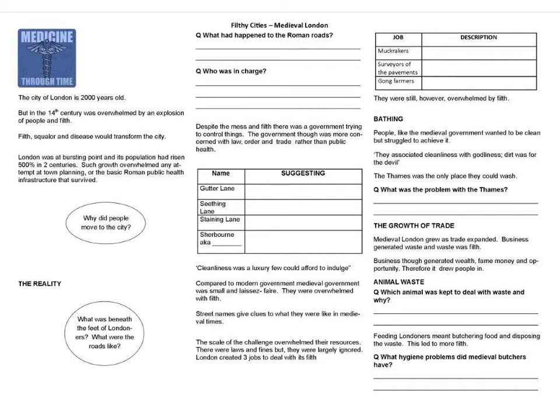It deals with concepts of laissez-faire, which we know will run all the way through to the 19th century, and the jobs that the government — however small — actually employed. It covers the growth of trade and how it brought things in, and includes a comprehensive and rather unpleasant sequence where Dan Snow actually investigates what exactly this filth was that was on the street.